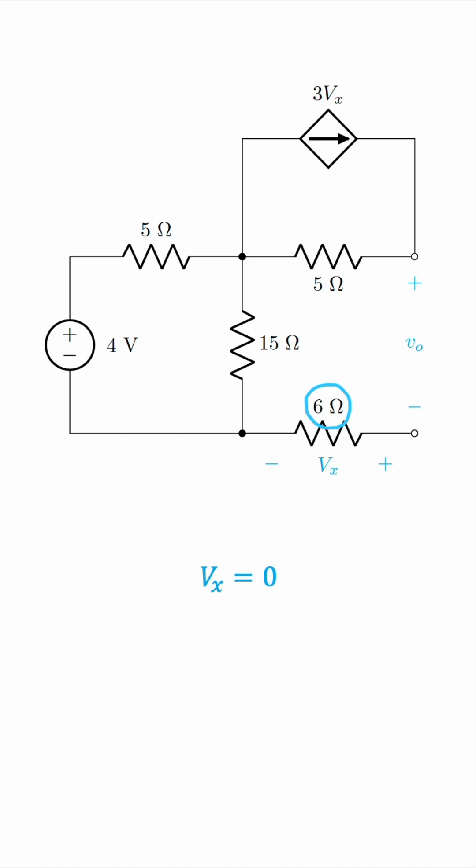meaning that Vx is 0. Now, 0 voltage is a short circuit, so we can actually remove this resistor entirely and replace it by a wire, like this.